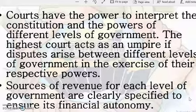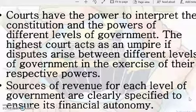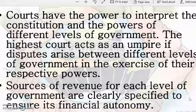Since we have two different types of government working — central and state — there might be cases where the central government frames rules that may not be acceptable to state governments, leading to a difference of opinion. In such cases, we need an umpire or referee who will give a proper judgment after hearing both sides. Our Supreme Court acts as that umpire between the various levels of government in case they have any dispute regarding their powers or functioning.